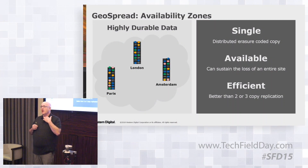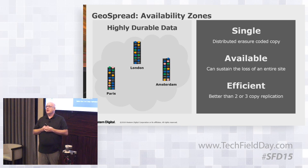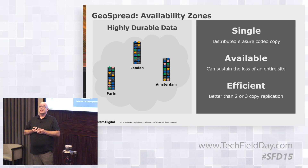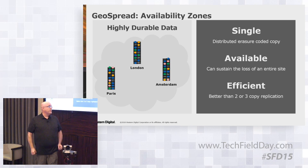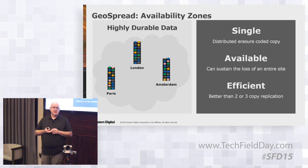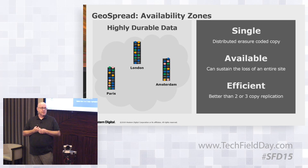GeoSpread is our ability to do that same erasure coding process across multiple sites. Whereas many systems will replicate across multiple geos, what we do here is — in this particular example, if you're writing a file in Paris — that file is ingested in Paris and chunked into 20 blocks. It's chunked into enough blocks to go to Paris and Amsterdam such that if one of these three sites goes offline, we can still do the erasure coding of enough chunks to read that data back from either of the two surviving sites.